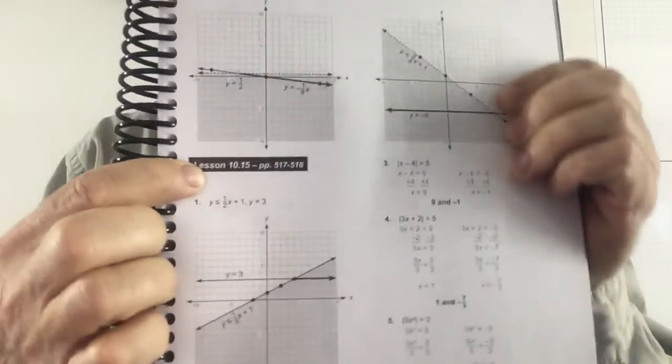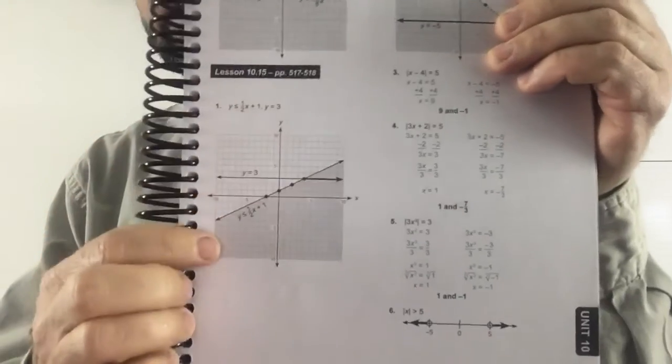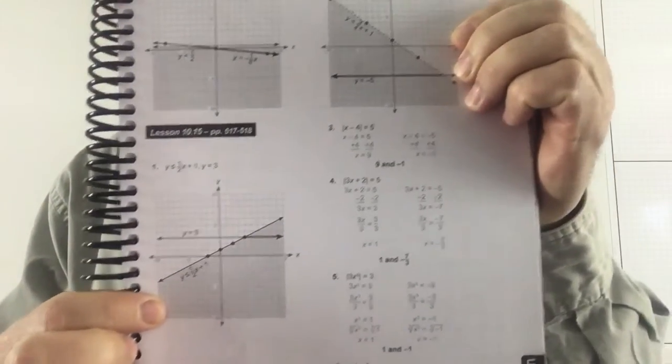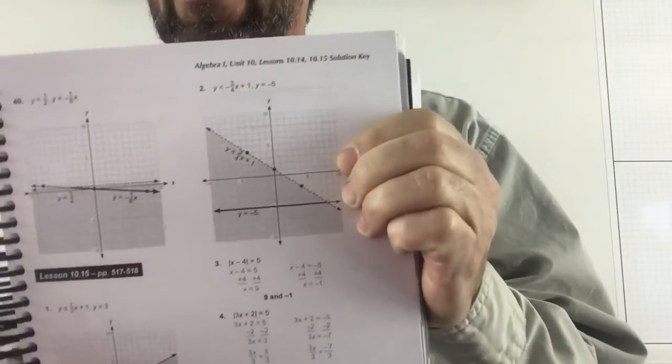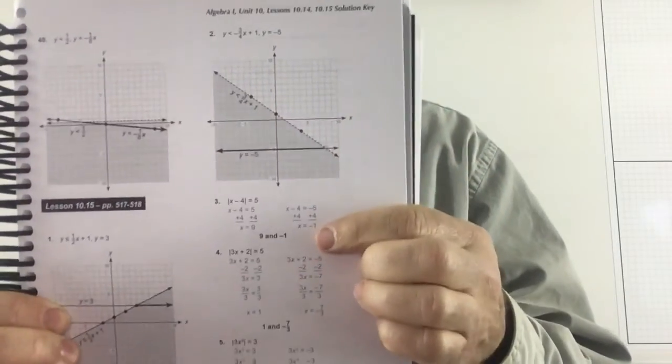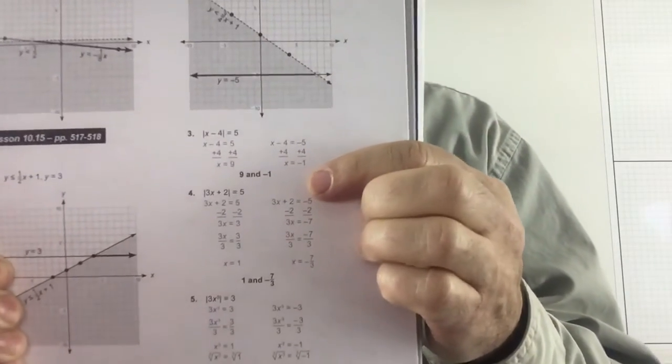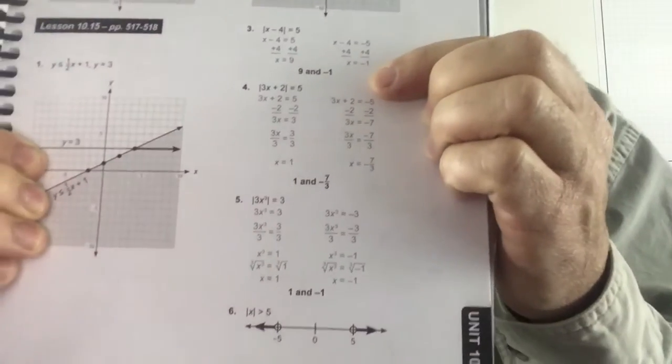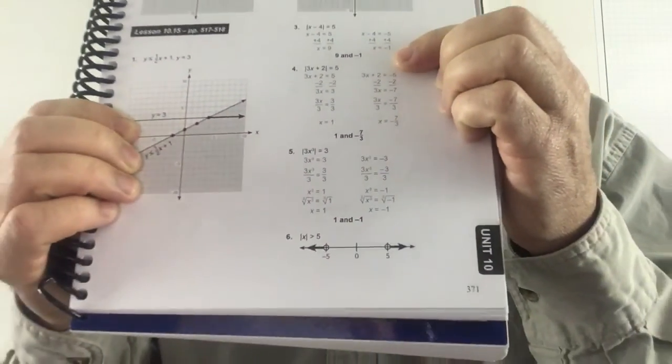So here we go. It's going to start over here on lesson 15 right here. And that's the way that should look. Number 2 is the problem here. 3, 4, 5, and 6. And I'll flip the page over.